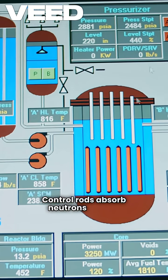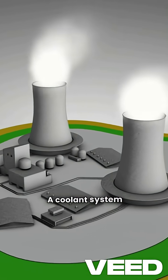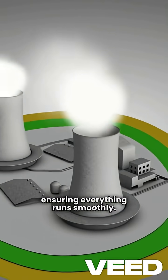Control rods absorb neutrons to keep the reaction safe and stable. A coolant system prevents overheating, ensuring everything runs smoothly.